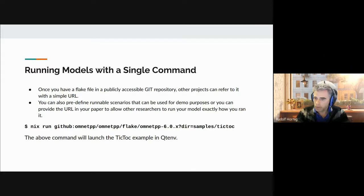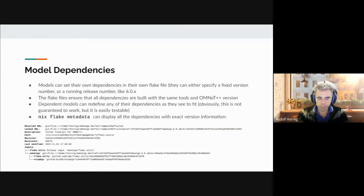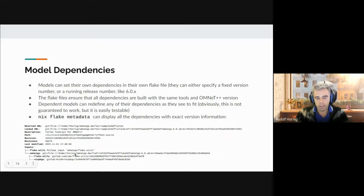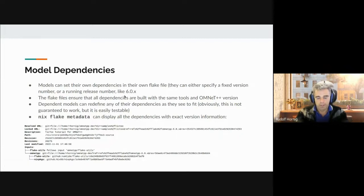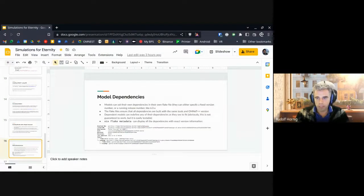This is what you're supposed to do when you have to publish a paper - create a self-running entry in the flake file that allows you to execute the whole simulation for third parties to play around with. You can also explore the dependencies between models - for this TicToc sample you can see there are dependencies only on OMNeT++ here, and it specifies the exact OMNeT++ version. But this covers the whole dependency tree back down to the actual compilers and low-level libraries, specified by the Nix package hash.